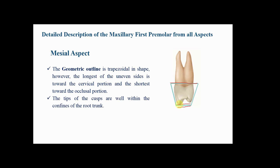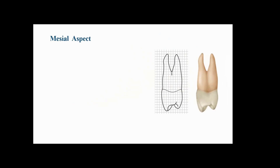The distance between the buccal cusp tip and the lingual cusp tip is shorter than the buccolingual dimension of the cervical portion of the root. This enables the tooth to perform its function properly without transmitting unnecessarily heavy forces to the supporting structures. This configuration is found for all proximal surfaces — mesial and distal — of all maxillary posterior teeth.